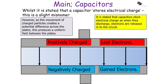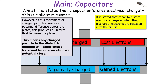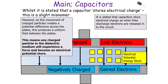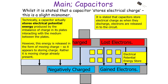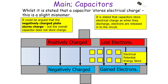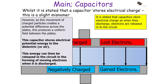When the capacitor discharges, the electrons are released into the electrical circuit. Any charged particle in the dielectric medium experiences an electrostatic force as it is a charged object in an electrical field, making it an electrical potential energy store. Technically, a capacitor stores electrical potential energy produced by the imbalance of charge in its plates interacting with the medium between them. This energy is released in the form of moving charge — it appears to store charge, but it is actually moving charge already present. The energy stored in the dielectric or air between the plates is released into the circuit as moving electrons when discharged.